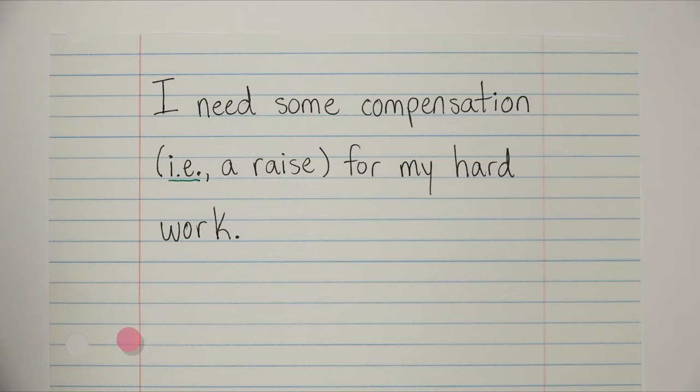I need some compensation, i.e., a raise, for my hard work. So we're saying that we need some compensation, which is a fancy way of saying that we want a raise. Again, notice the comma. This is because i.e. is very similar to in other words, which is a phrase that pretty much always takes a comma.